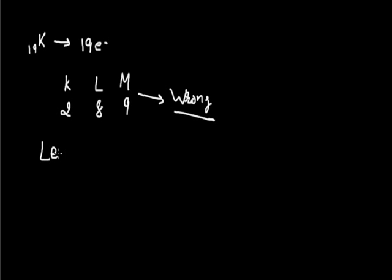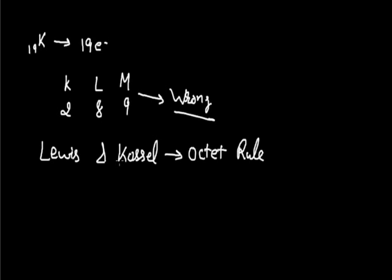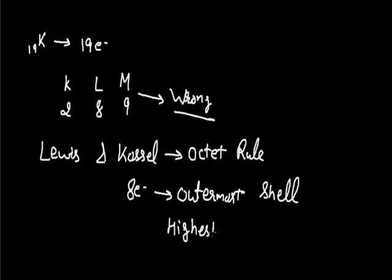According to the octet rule stated by Lewis and Kossel, an atom has highest stability when it contains 8 electrons in its outermost shell. Argon had 8 electrons in its outermost shell and was in its most stable state. Giving 9 electrons to M shell would destroy that stability, which is not possible. To maintain stability, we give only 8 electrons to M shell, and the remaining 1 electron moves to N shell.